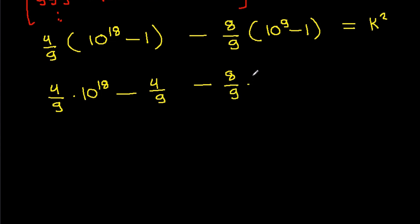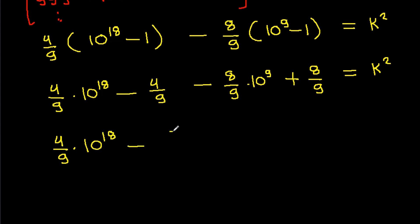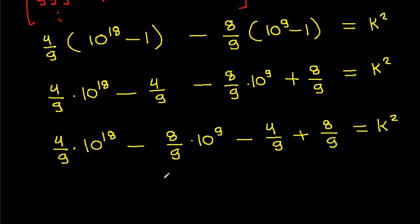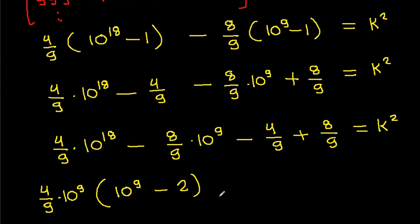So here it is 10 power 3 minus 1, and so on. That is 10 power 3 minus 1 plus 10 power 3 minus 8 by 9 times, and so on — that is 10 power 3 minus 8 by 9 times 10 power 9. So here it is 4 by 9 times 10 power 9 minus 8 by 9 times 10 power 9 minus 4 by 9 plus 8 by 9 is equal to k squared. And here, we can take 4 by 9 times 10 power 9 common, and it will be 10 power 9 minus 2, and minus 4 by 9 plus 8 by 9 will be plus 4 by 9, equal to k squared.